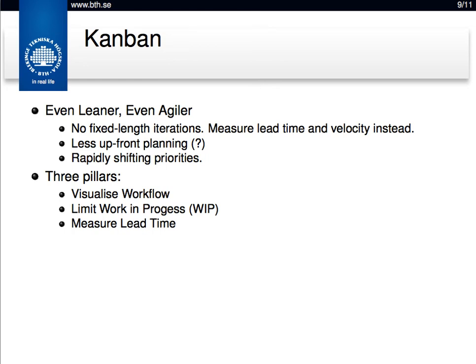Kanban takes it to the next level. If you have really quickly shifting priorities, you can't have a prioritized backlog because priorities change on a daily basis. Whatever you picked at the beginning of a sprint is out of date or not prioritized the same way halfway through, even if it's only two to three weeks. They say it's less upfront planning, though there's a lot of setup before you can get to Kanban. There are no fixed-length iterations — no two to three week sprints and regular release cycles. Instead, you measure lead time and velocity.